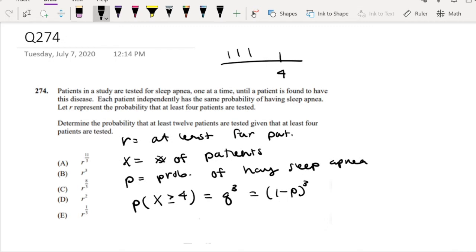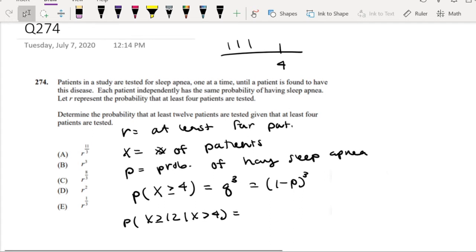And they're looking for the probability that at least 12 patients are tested, given that at least 4 patients are tested. Okay, well, the probability that at least 4 patients are tested is already included in the probability that X is greater than 12, right? So then this could just be reduced down to X is greater than 12, because it's kind of redundant for us to say it twice.